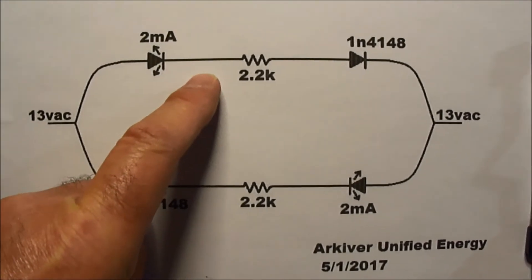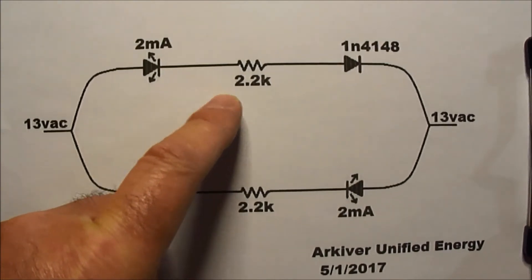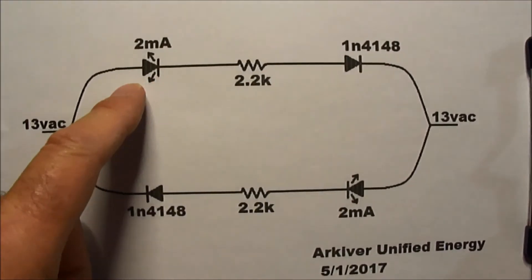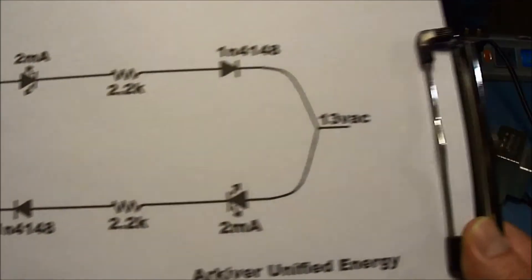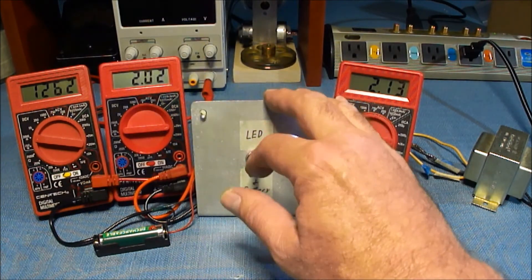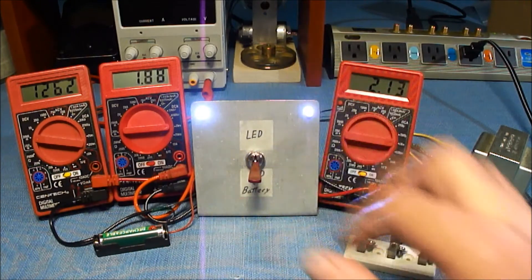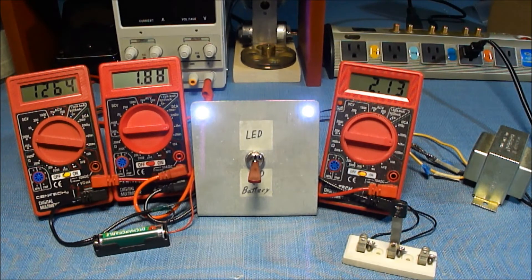If I put a battery in this upper branch, the increased resistance should reduce the amount of current going through that branch. You can see right now we have two milliamps on each LED, and it does reduce the amount of current — we're down to 1.88 milliamps in the upper branch.